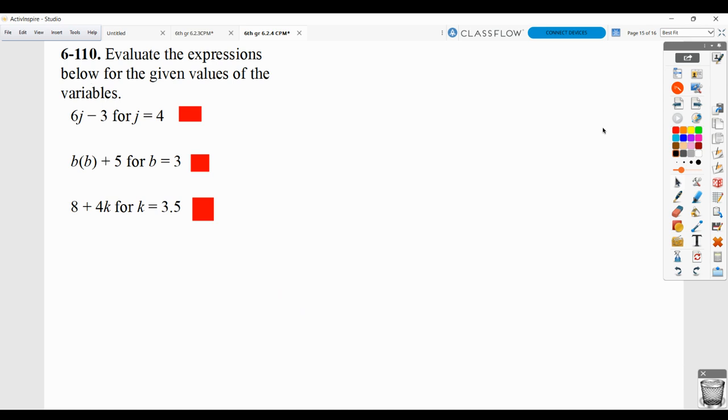Here, make sure you're showing your work. Evaluate means find the value. So 6j minus 3 for j equals 4 means replace the j term right here with 4 and then figure out what it equals. So what I should see for work is that you took 6 times 4, because remember a number in front of a letter means multiply, so 6 times the value of 4 and then subtracted 3 from that. So 24 minus 3 would give you 21. So don't just have 21. Make sure you show how you got that.